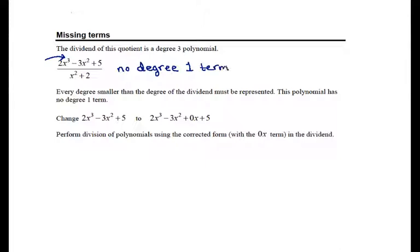And then we go right to our degree 0 term, which is that constant. So, if we don't have every power from the highest power down to degree 0 represented in our polynomial, then what we have to do is fill it in with a 0.